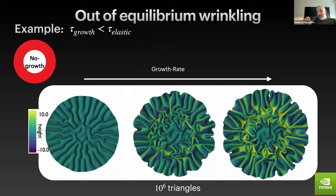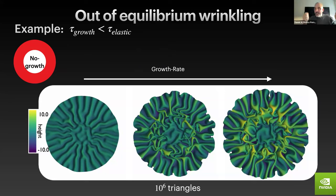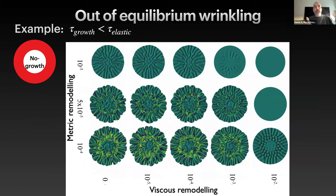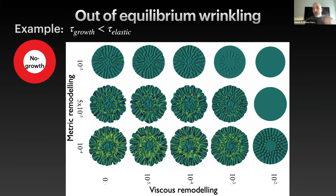Here you see some of the results. The system has the same material properties throughout — the only thing that has changed is the growth rate. By growing out of equilibrium, you see that the system has much more access to certain configurations that it wouldn't have otherwise. This was kind of a surprise. You can see how this changes with the viscosity and the growth rate: the viscous parameter is on the x-axis and the metric growth is on the y-axis. There are many geometrical shapes you can access just by changing the growth rate out of equilibrium.